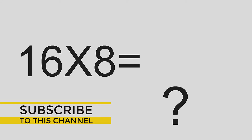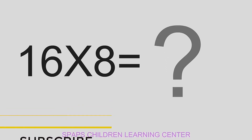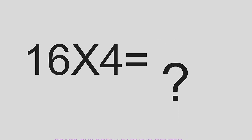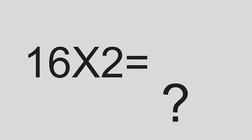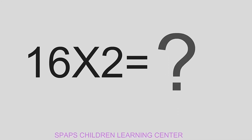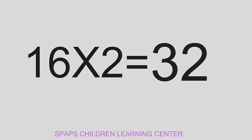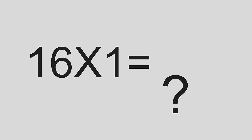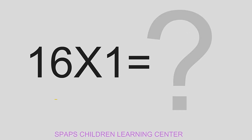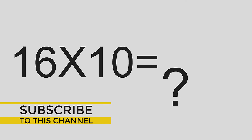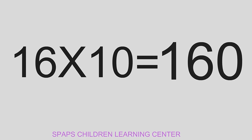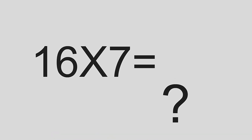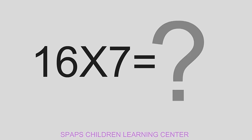16 times 8 equals 128. 16 times 4 equals 64. 16 times 2 equals 32. 16 times 1 equals 16. 16 times 10 equals 160. 16 times 7 equals 112.